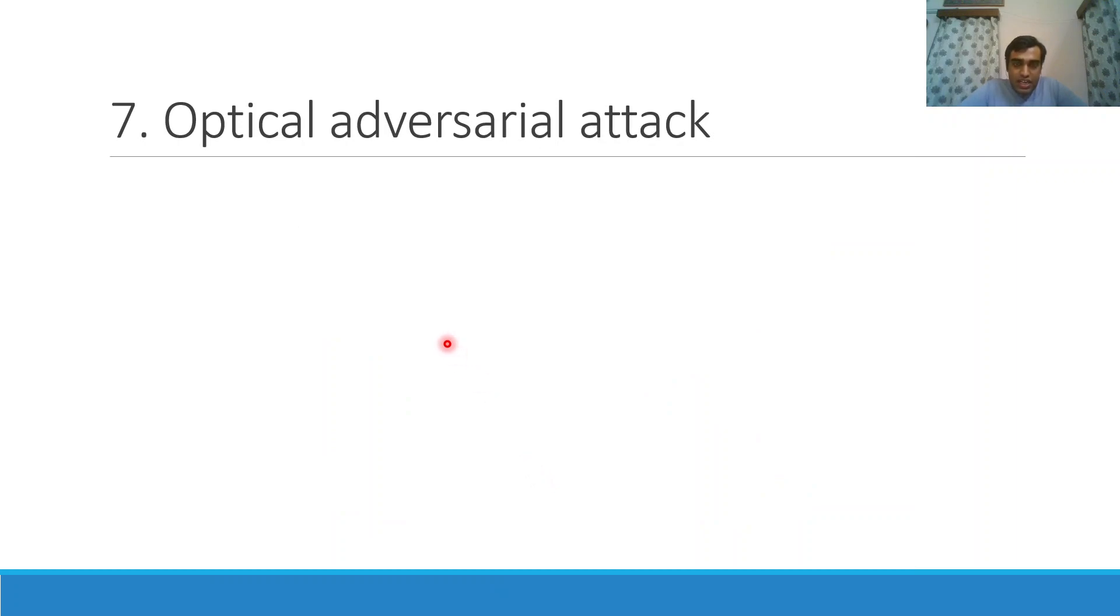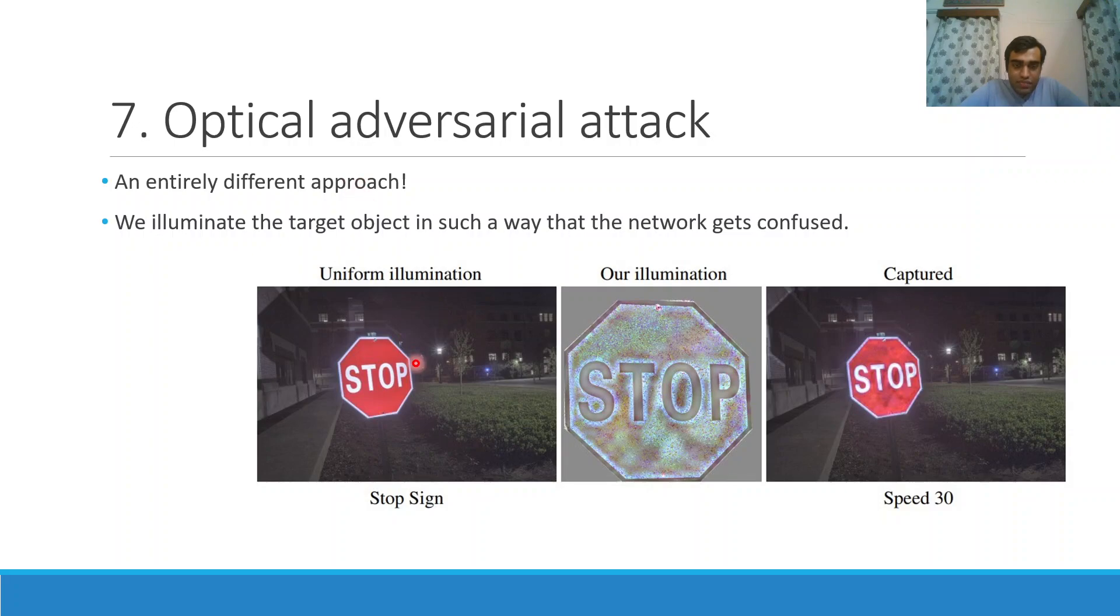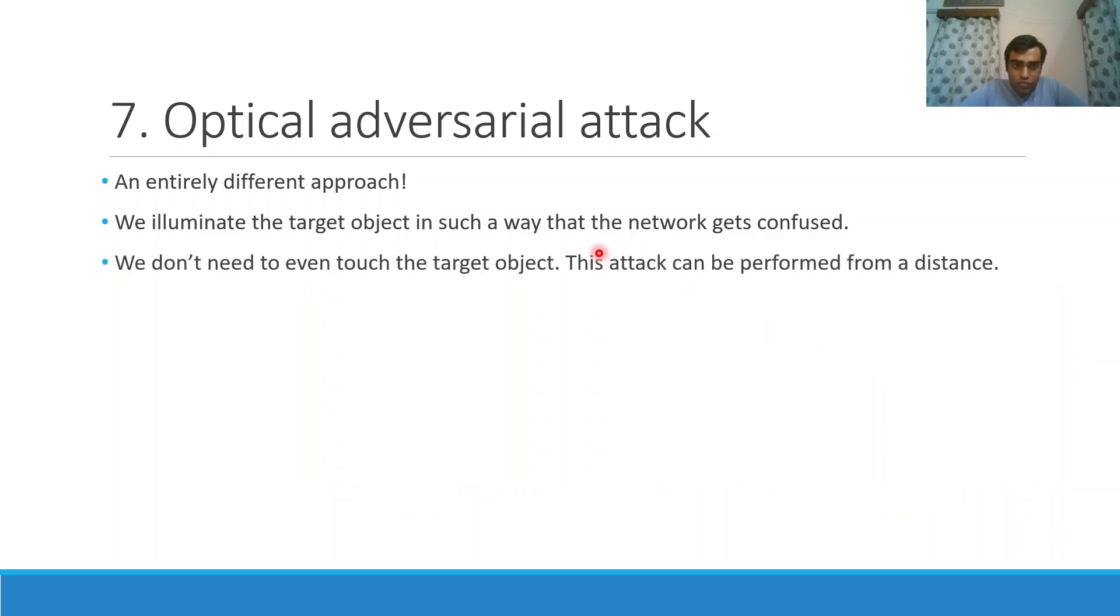Another method is optical adversarial attack. Here it is a little different from previous cases. We don't have to literally go near to the object and can even attack from a good distance. As the name says, we use some optics here. We flash some light on the target object and illuminate it in such a way that the model is confused. Here we have illuminated in a very structured manner, like some places are dark and some are light, so that a neural network thinks that this is a speed 30 sign. Accidents may happen instead of stopping, the car will just keep on going. We don't even need to touch the target object. This attack can be performed from a distance also.